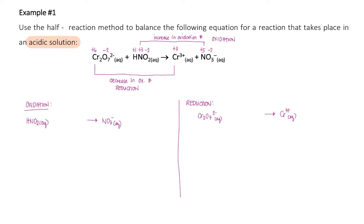After writing the two half-reactions, the next step is to balance the number of atoms of all elements except oxygen and hydrogen. For nitrogen, we have one nitrogen on the left and one on the right, so no change is needed — the number of nitrogen atoms is already equal on both sides.